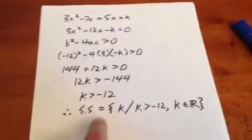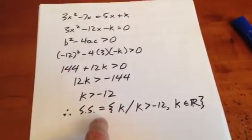So our solution set is the set of all k such that k > -12, and k is an element of the real numbers.